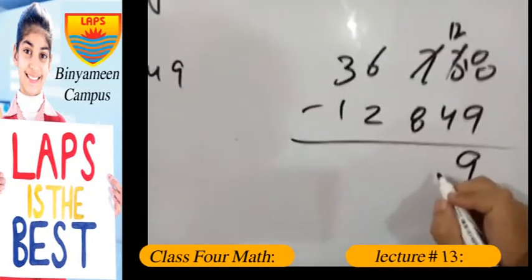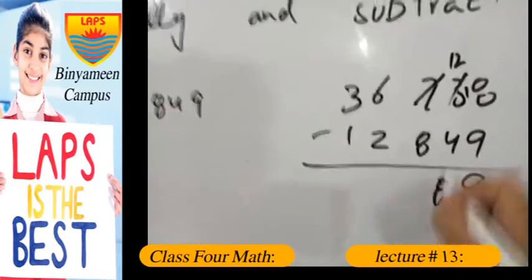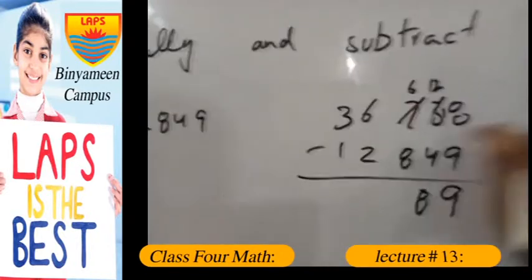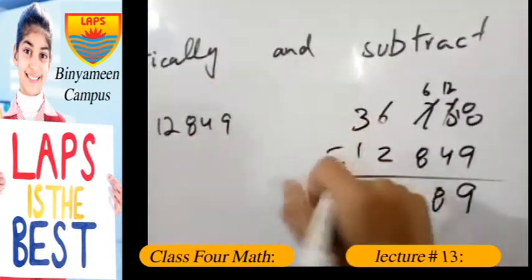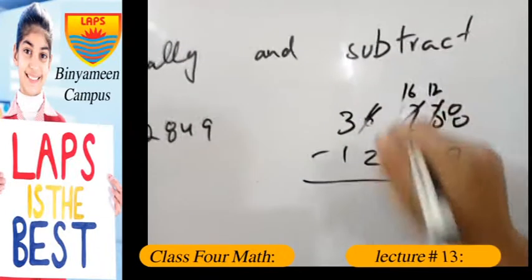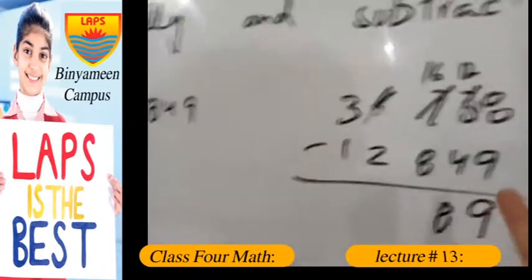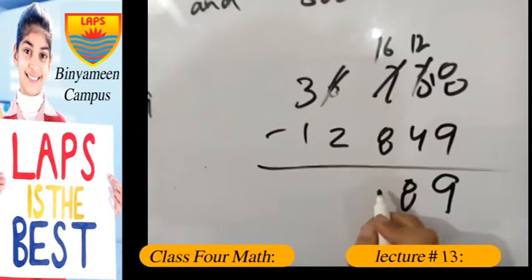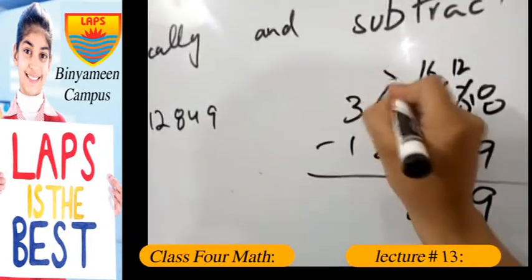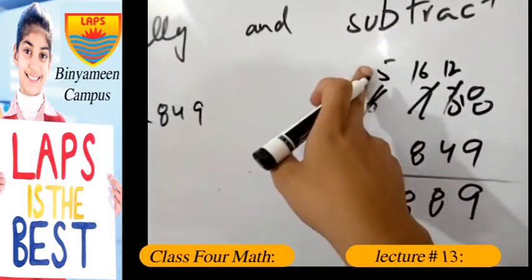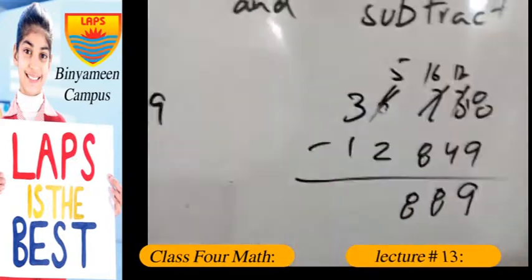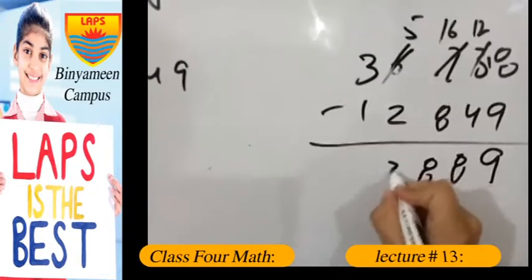So if you minus 4 from 12, we get 8. And 6 here—6 is less than 8, so we have to take a carry from 6. It becomes 16, and if we subtract 8 from 16, we get 8 back. And for the 5 here, we subtract 2 from 5 and we get 3.